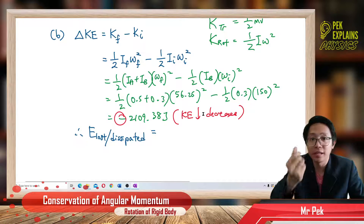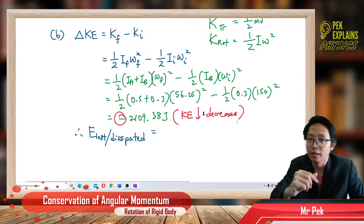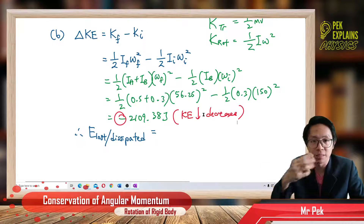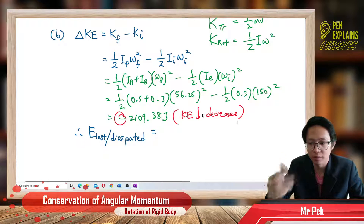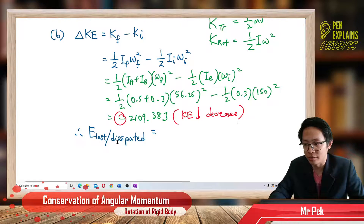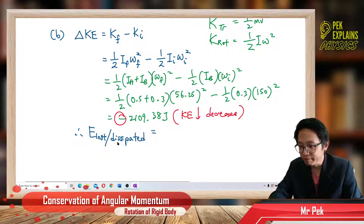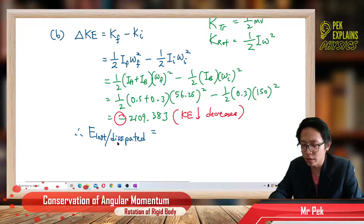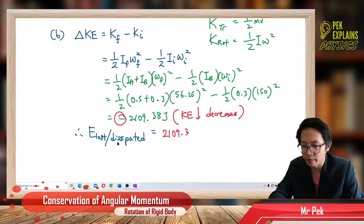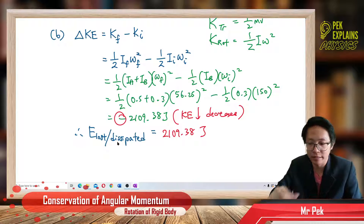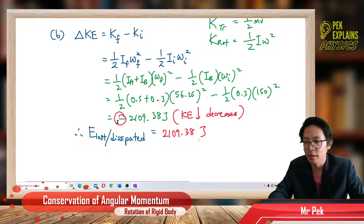The kinetic energy decreases because the loss of kinetic energy is converted to heat energy and dissipated. So the energy lost is 2109.38 joules — no need to put the negative sign when reporting the amount of energy lost.